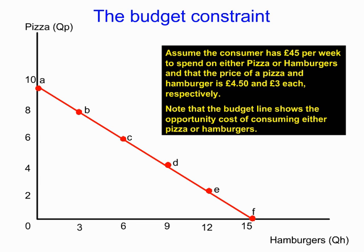The consumer could also be at points B, C, D, or E. At point B, for example, they would buy eight pizzas at four pound fifty each — that's thirty-six pounds — and three hamburgers at three pounds each — that's nine pounds — totalling forty-five pounds. Every point on this line equates to forty-five pounds. Moving from one point to another shows the opportunity cost of giving up pizza to get an extra hamburger, and vice versa. The budget line shows the affordable set of purchases the consumer can make.